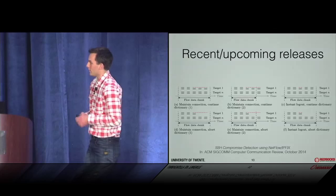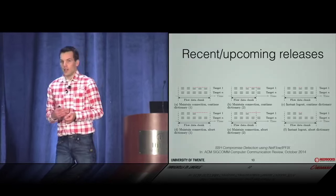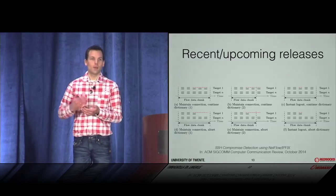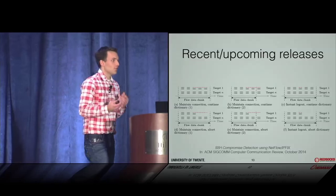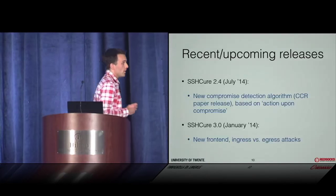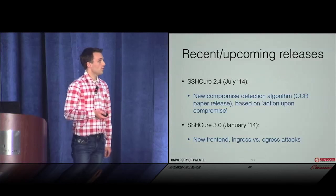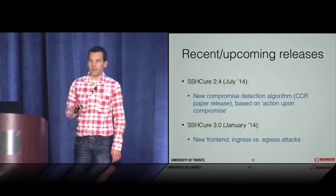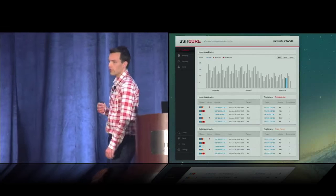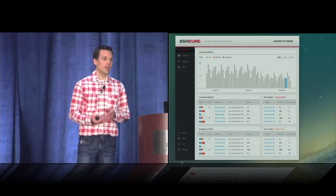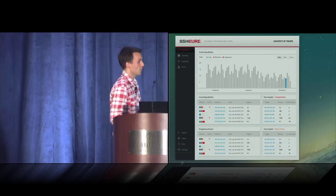We work with data chunks, so these actions upon compromise can span multiple data chunks — that's why we have two additional cases that are semantically the same but solve a technical problem. That is what we implemented in Shikure 2.4, and it gave us very good results. Currently we are working on Shikure 3.0, with a completely new front-end and new insights, trying to implement a tool that helps monitor your network and identify compromised hosts in near real time.